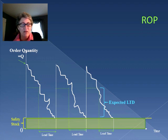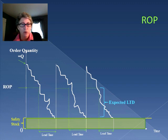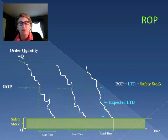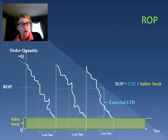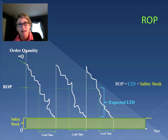So when we add the safety stock with the expected lead time demand, now we have a different reorder point — it's greater than just the expected lead time demand. It's equal to the lead time demand plus the safety stock. In very simple situations, the reorder point is the lead time demand, but if there's some variation in the demand or the lead time, we add safety stock to the lead time demand to get to that reorder point.